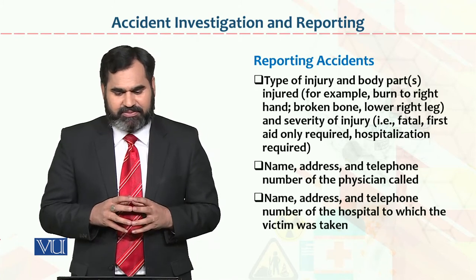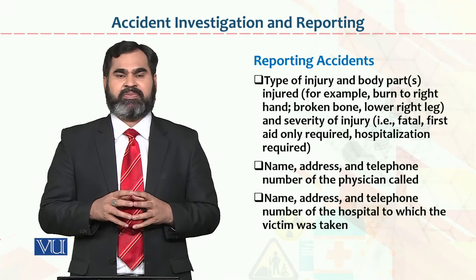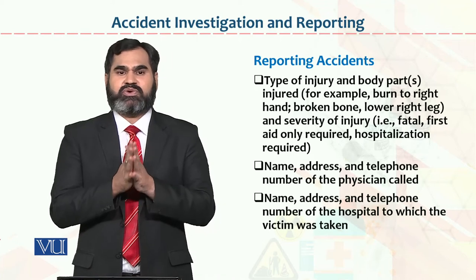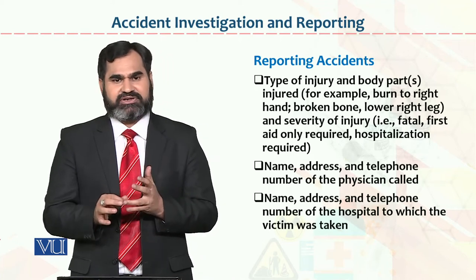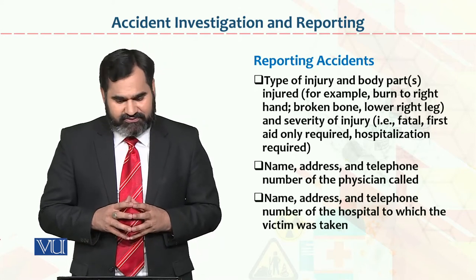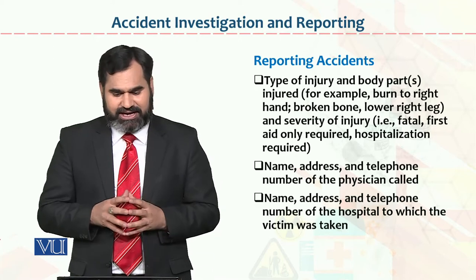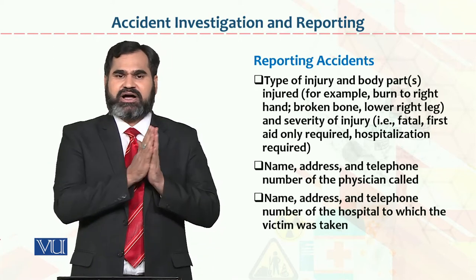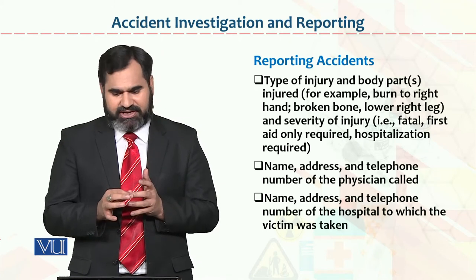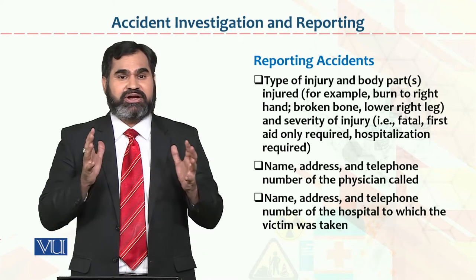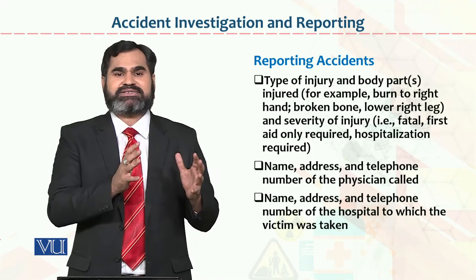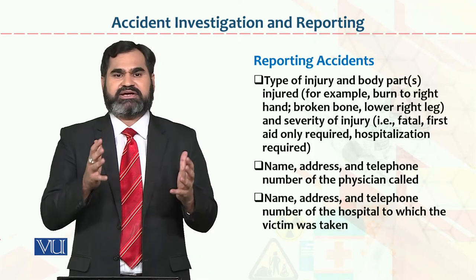Name, address, and telephone number of the physician called — the person you called for first aid, who came and examined the victim: their name, designation, and telephone number will be part of the report. Then the name, address, and telephone number of the hospital to which the victim was taken — the hospital's name, telephone number, contract number, and full address will also be part of the report. If this complete detail is not part of the report, it will not be a comprehensive report.